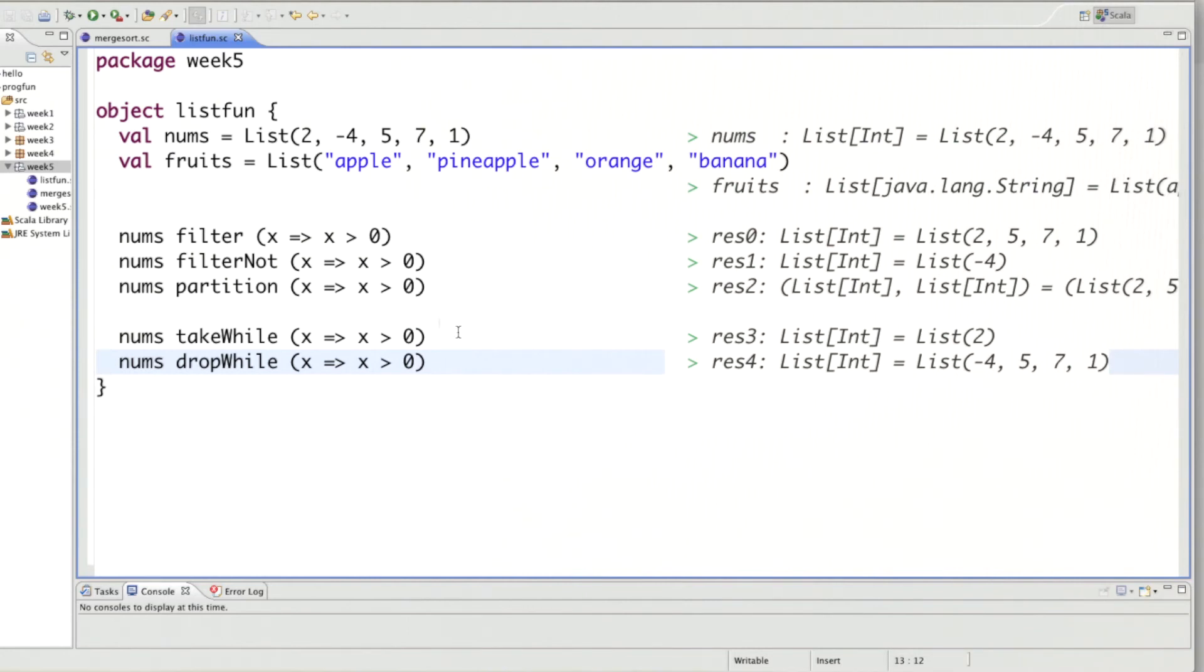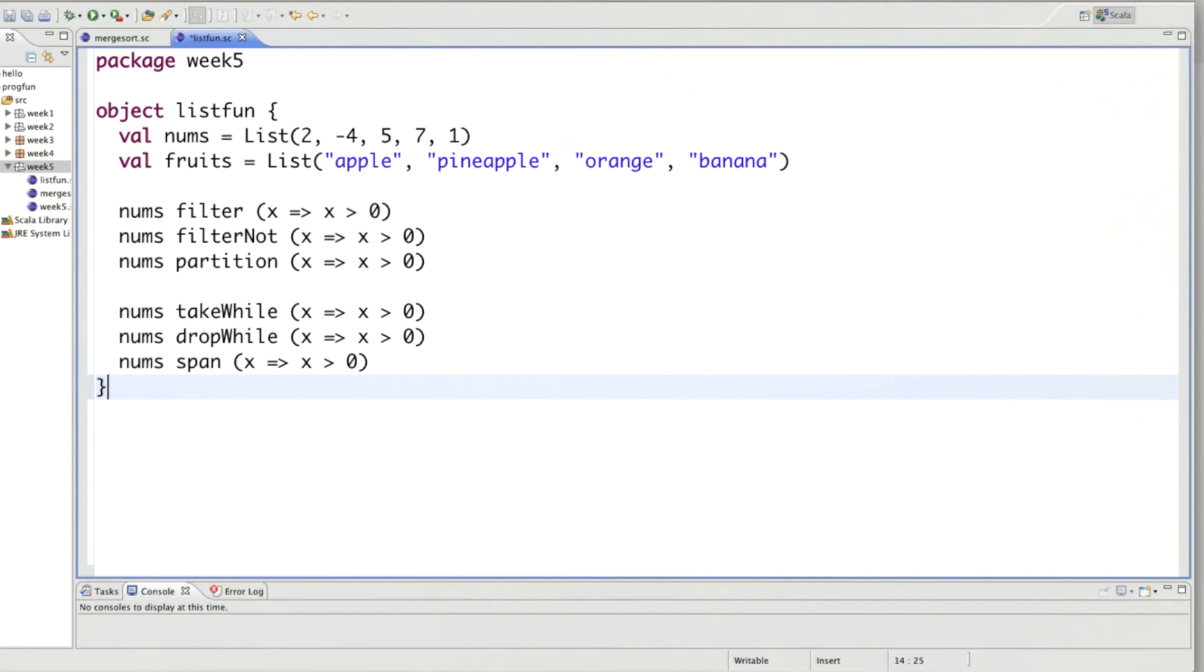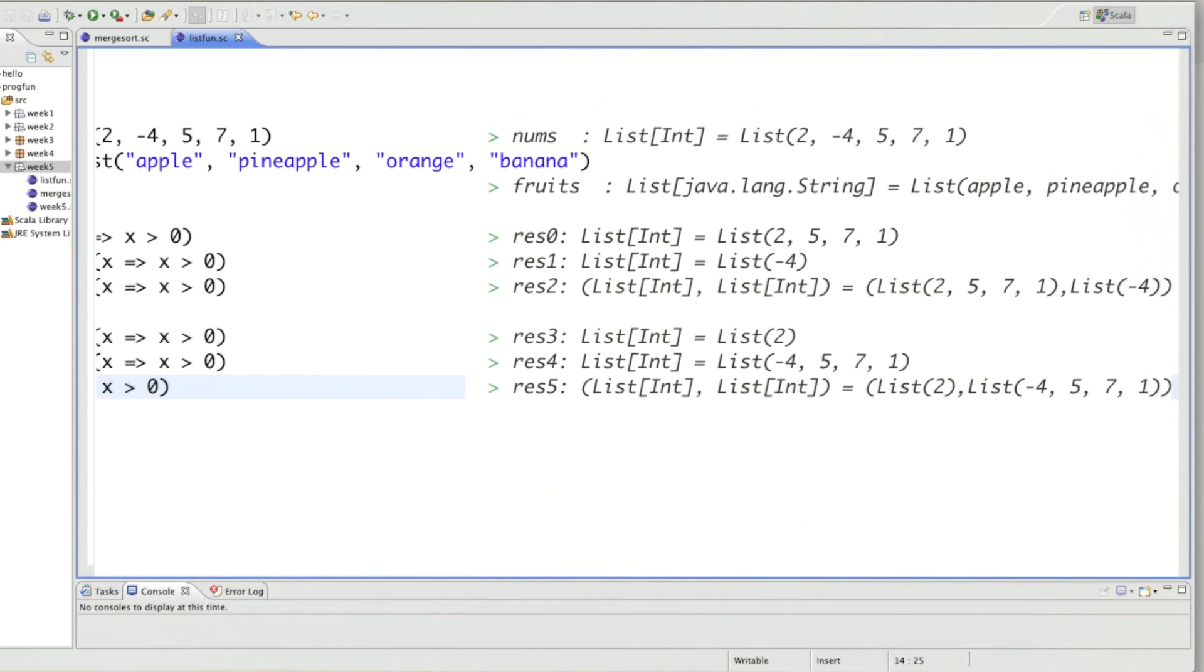And finally, where we had partition that combined the filter and filter not, we also have an operation that combines a take while and a drop while. That operation is called span. So if we do that, then what we will see is that it will give us essentially the combination of a take while that was the list two and a drop while.